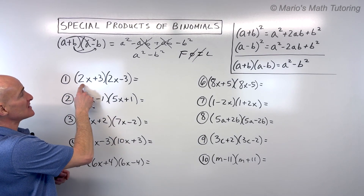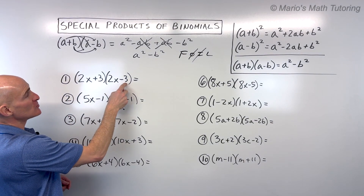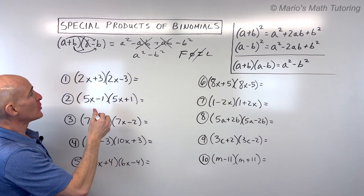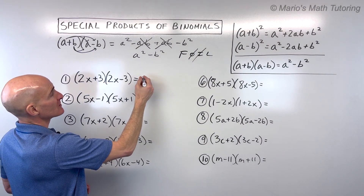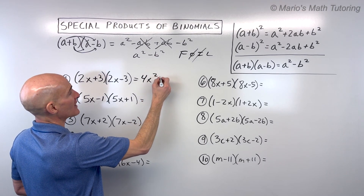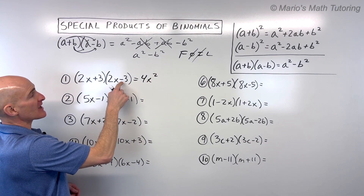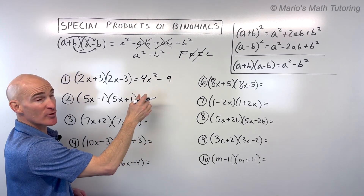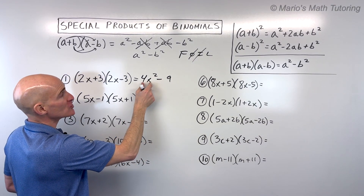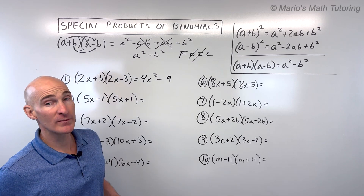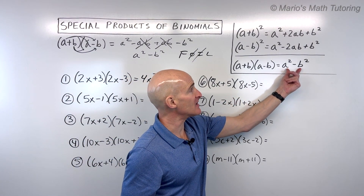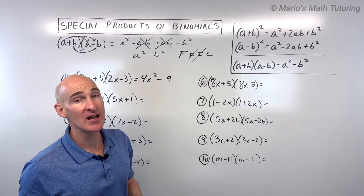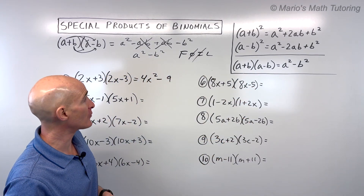For example number one: 2x plus 3 times 2x minus 3 — these are the same two terms, just one with plus and one with minus. First times first: 2x times 2x is 4x squared. Last times last: 3 times negative 3 is negative 9. This result is called a difference of two perfect squares. Eventually we'll factor expressions like this back into two binomials.